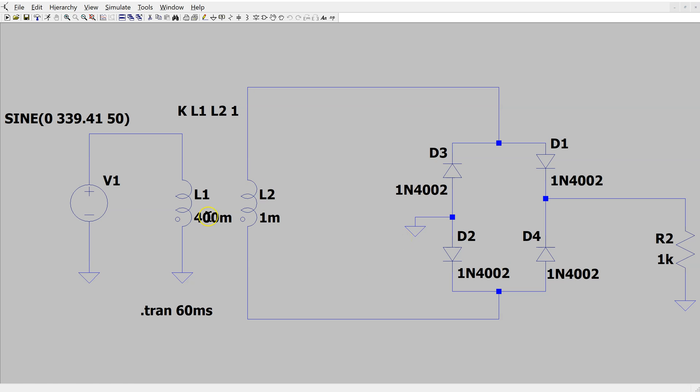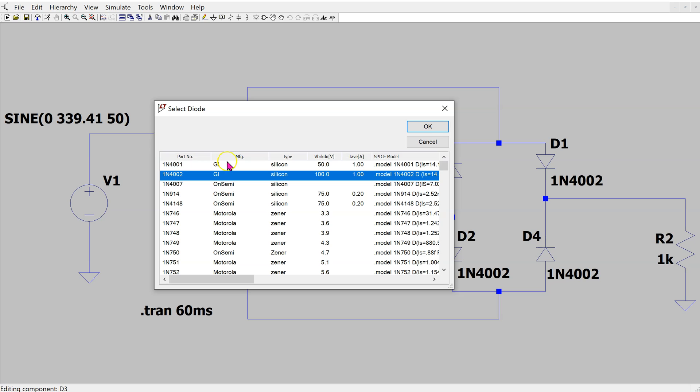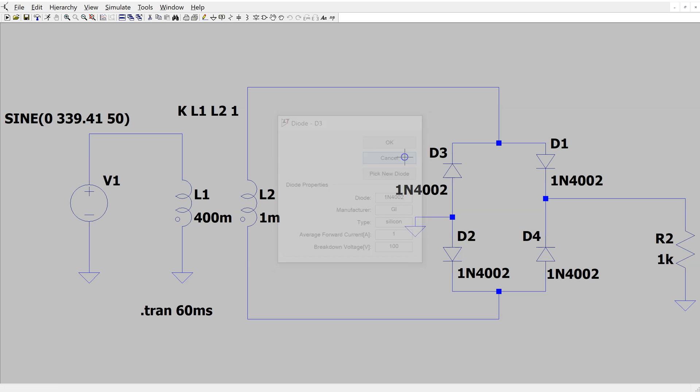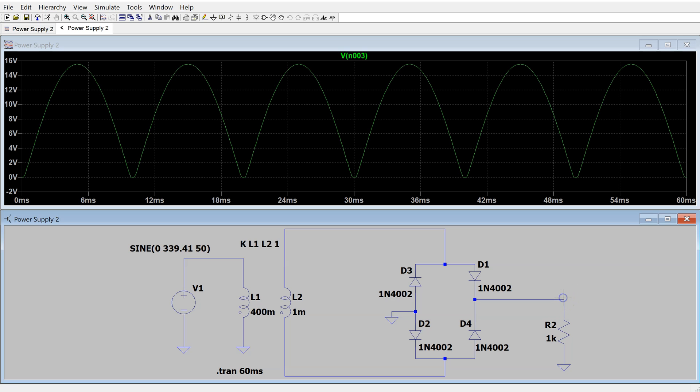This shows the transformer and bridge rectifier circuit in LTSpice. If desired, we can right-click on the diode and then click pick new diode and change to a different available diode model. We can run this simulation and look at the output voltage.